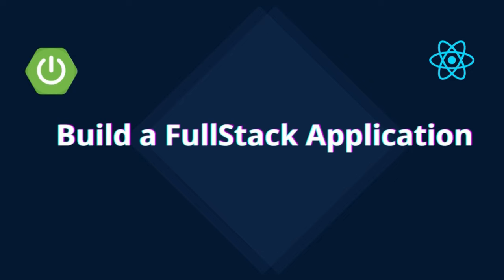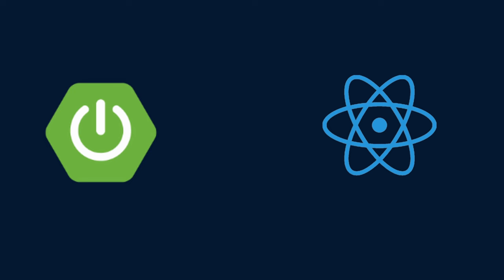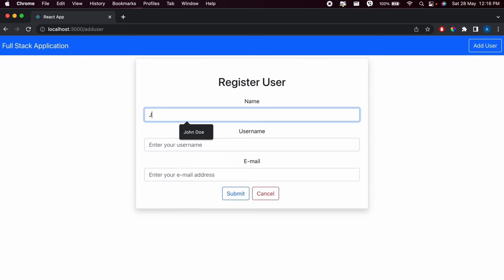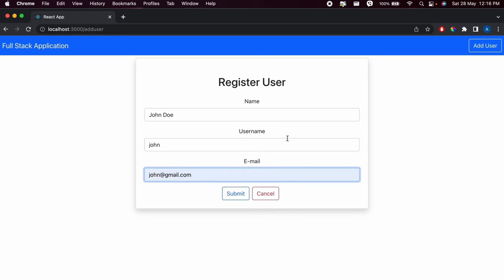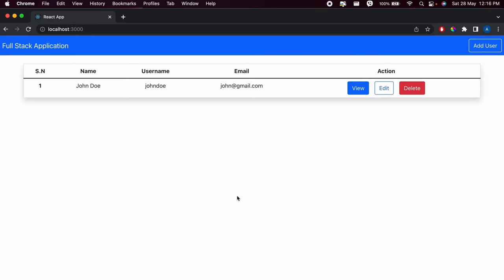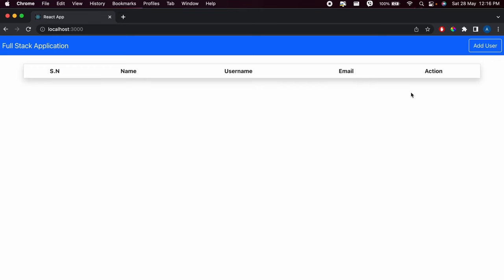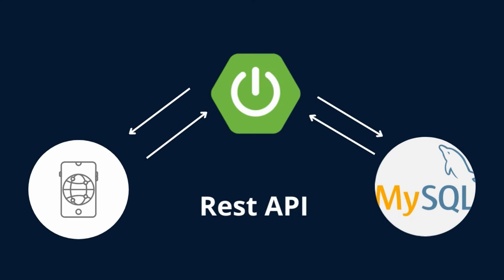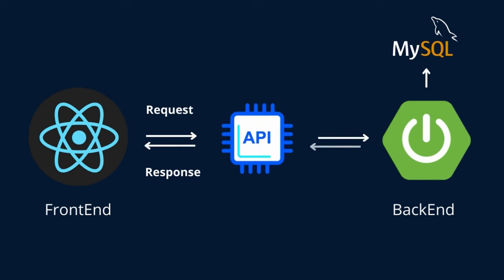Welcome to the ultimate course on building a full stack application using Spring Boot and React. By the end of this course you will be able to make a full stack cloud application where you can create a user, read the data of a user, edit the user, and also delete the user. You will also learn how to build a REST API using Spring Boot and MySQL and integrate it in the frontend with React.